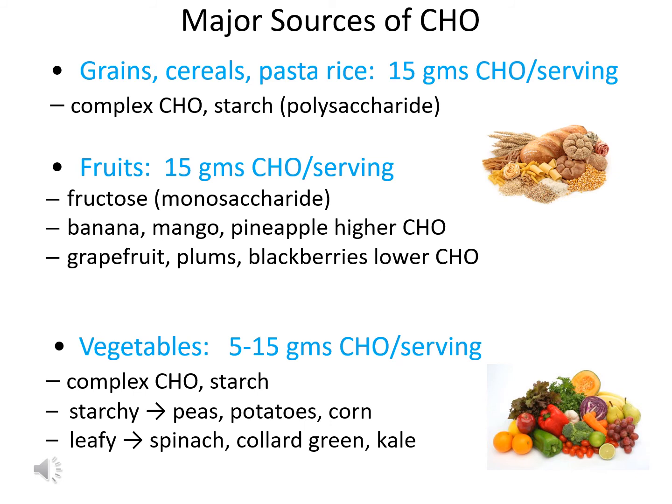Then we have the vegetables, which can vary greatly as far as the amount of carbohydrate present. Starchy vegetables — things like peas, potatoes, and corn — are going to have closer to about 15 grams per serving. Leafy vegetables — things like spinach, collard greens, and kale — have a lower amount of carbohydrate, maybe closer to about 5 grams per serving.